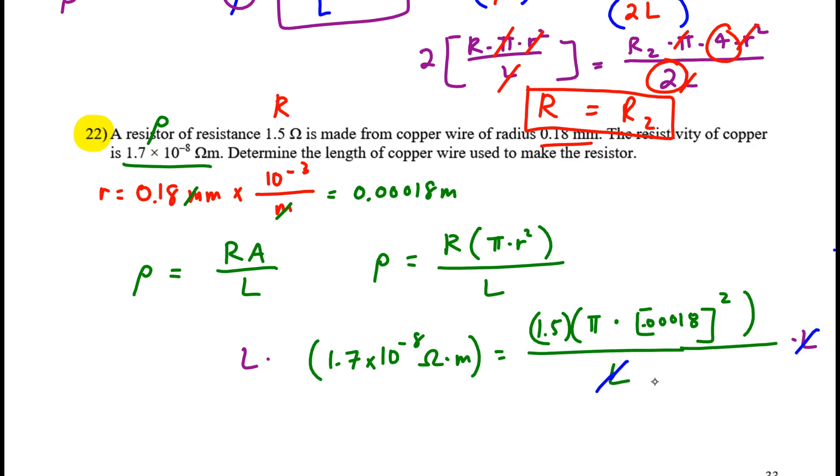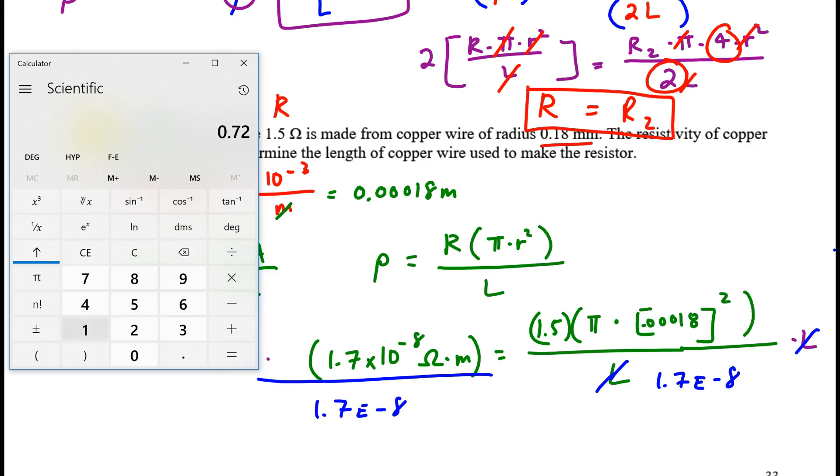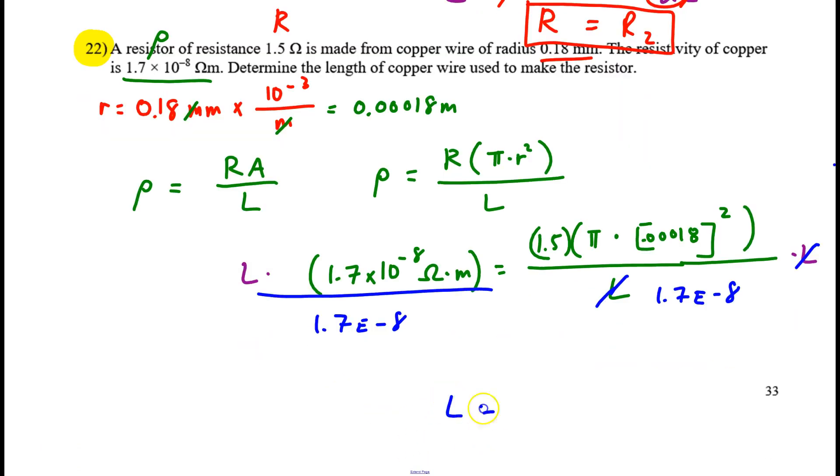I will multiply both sides by L to make it cancel from the right side, and to get it out of the denominator. Then I'll divide both sides by this 1.7 times 10 to the minus 8. And what do we get? We have on the right 1.5 times pi. We have times 0.00018 squared. And we have to divide by 1.7 times 10 to the minus 8. We would want that rounded to 2 sig figs, which would come to 0.90 meters, or 90 centimeters if you want to write it that way. Okay, well done.